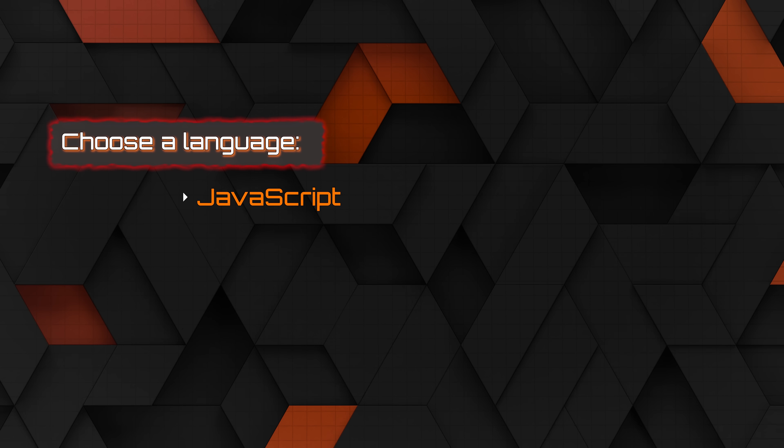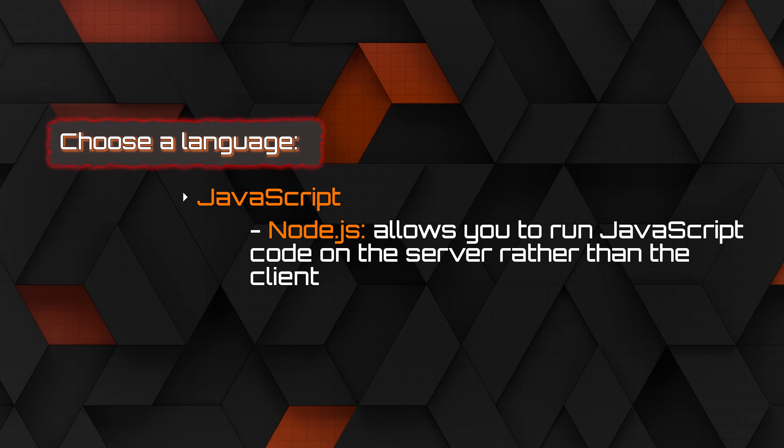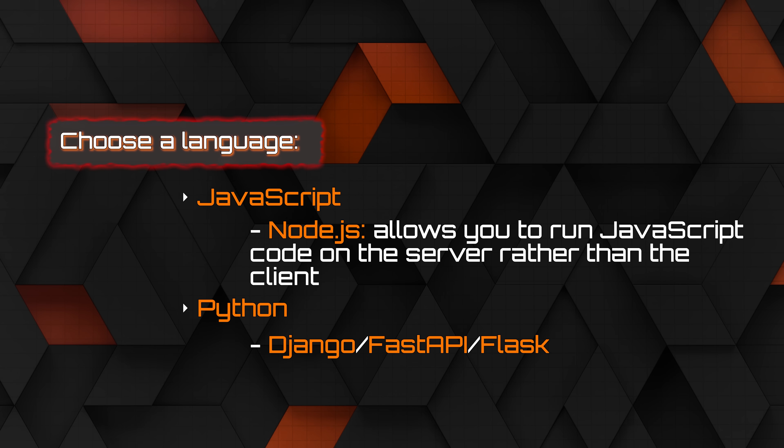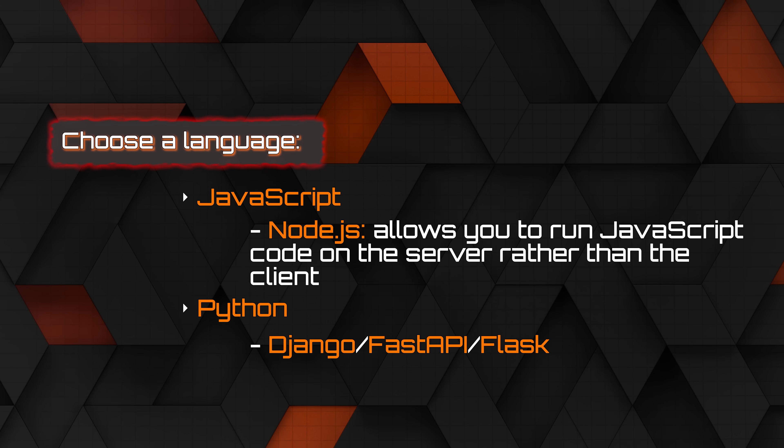Once you've learned a front-end framework, it's time to move on to backend technologies. The first thing to do is pick a backend language. The easiest option is JavaScript, since you've already learned it for the front end — you can use Node.js, which allows you to run JavaScript on the server rather than the client, and use a framework like Express to create backend servers. Another popular option is Python, where you can use Django, FastAPI, or Flask to build backend APIs. You also have options like Go, C#, and Java, but if you're just starting out, I suggest Python or JavaScript as the fastest path. If you have a particular stack in mind, pick the appropriate language for that stack.